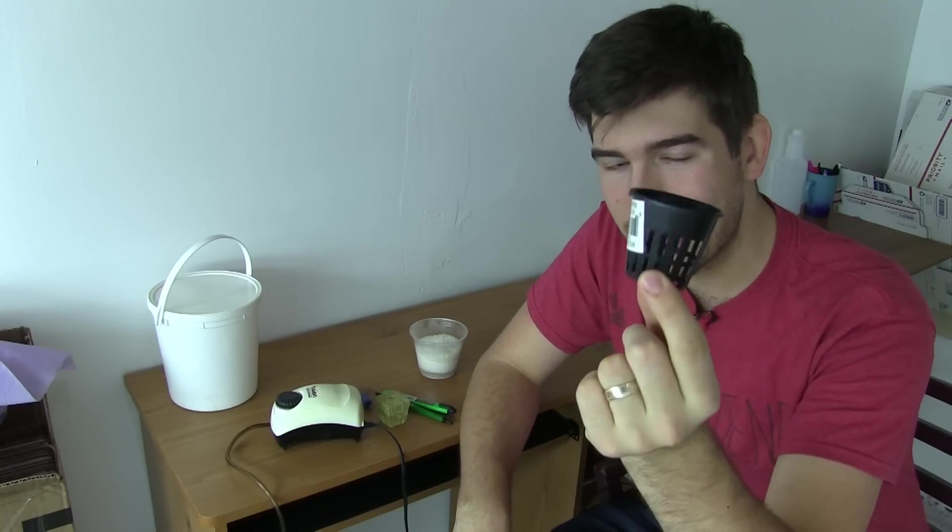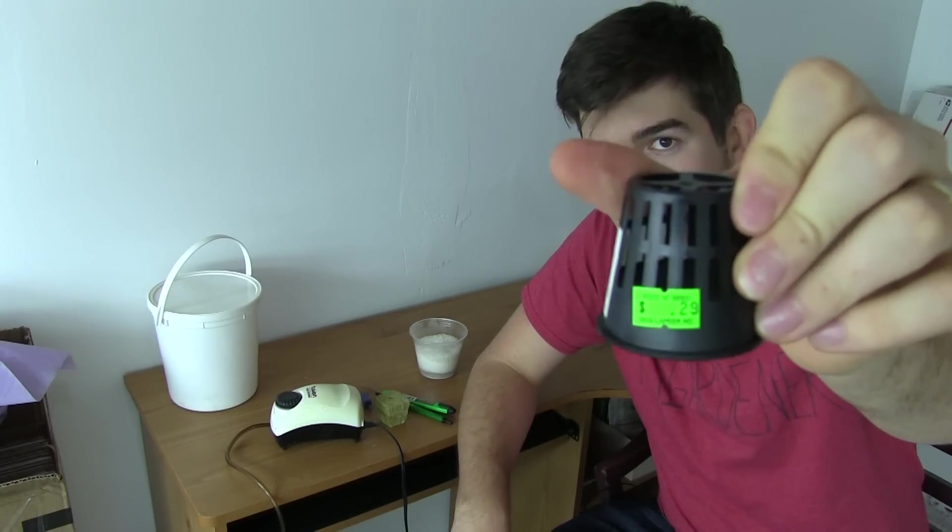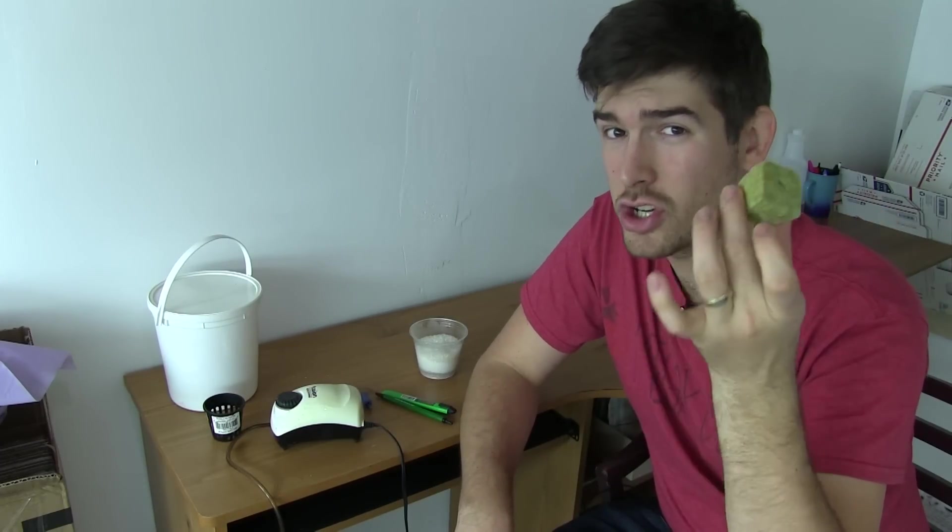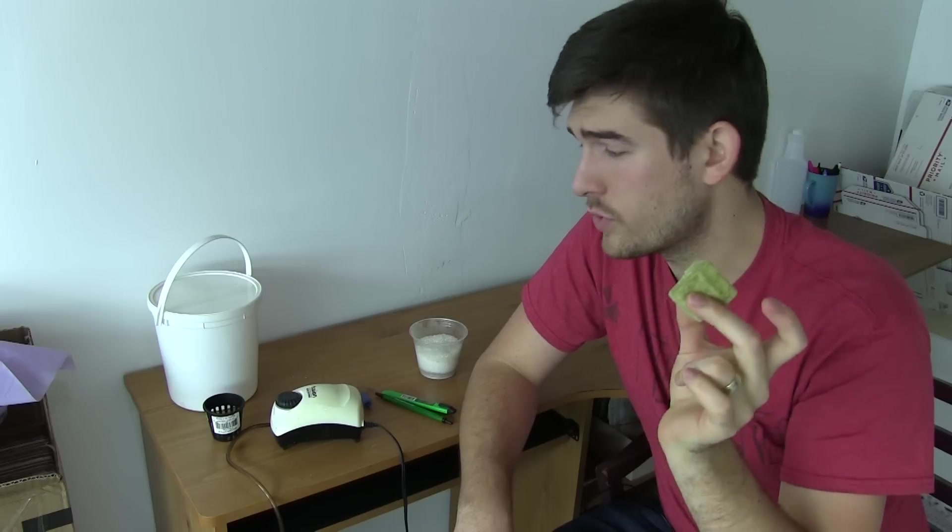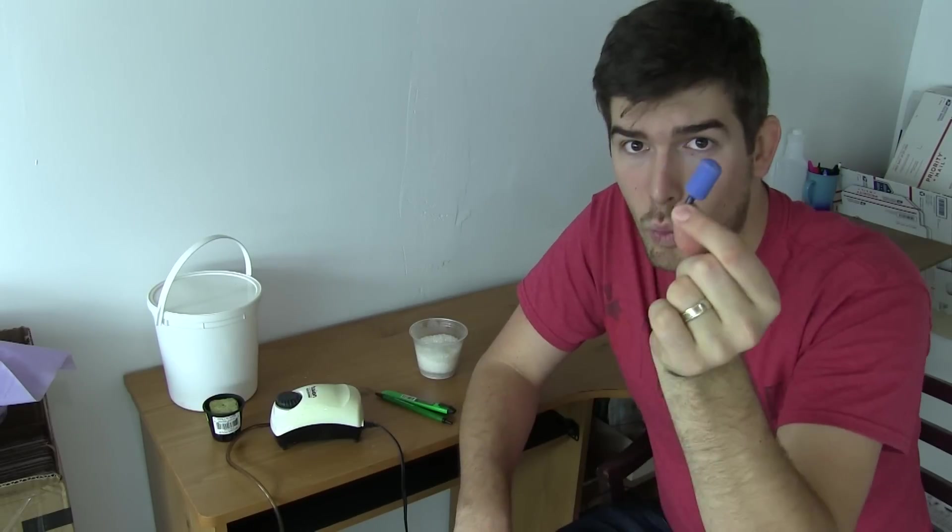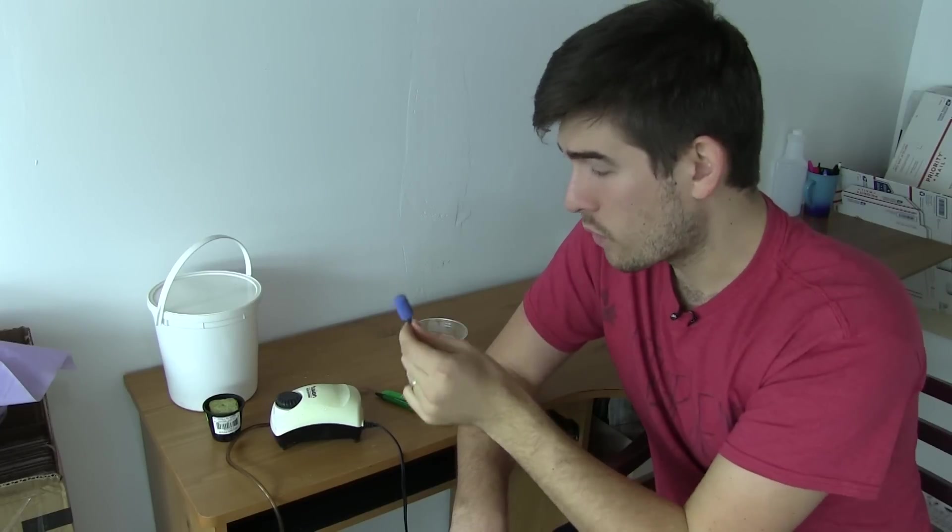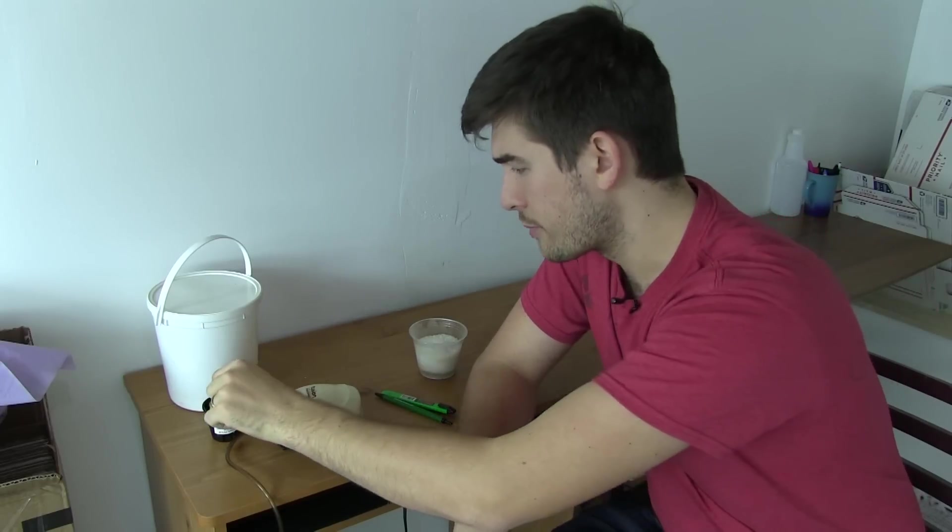Next thing you're going to need is one two inch net cup. This cost us 29 cents. We got one of them, 29 cents. One cube of rock wool. This should cost you around 5 cents, so now we're up to 34 cents. One bubbler, got this for 10 cents, so now we're up to 44 cents for the project.